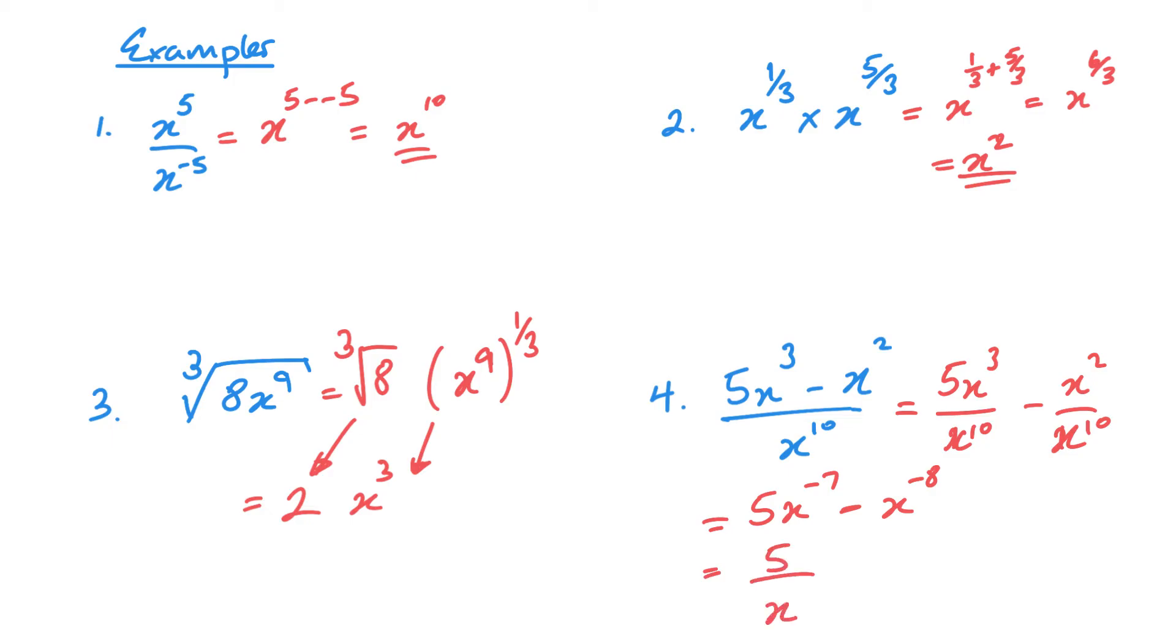And then these could also be written as 5 over x to the positive 7, and 1 over x to the positive 8. So if you needed to write them as a positive power, then you could. Now let's look at evaluating a few numbers.